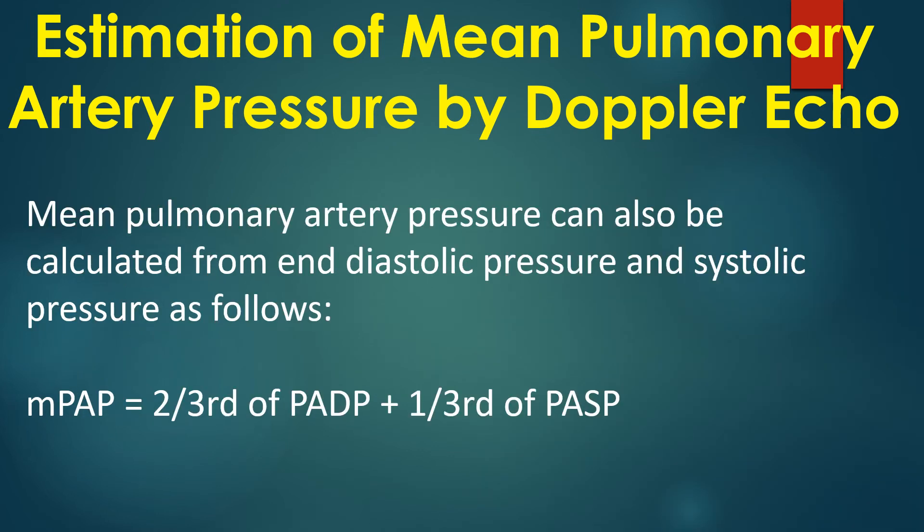Mean pulmonary artery pressure can be calculated from end-diastolic pressure and systolic pressure as follows: mean pulmonary artery pressure equals two-thirds of pulmonary artery diastolic pressure plus one-third of pulmonary artery systolic pressure.